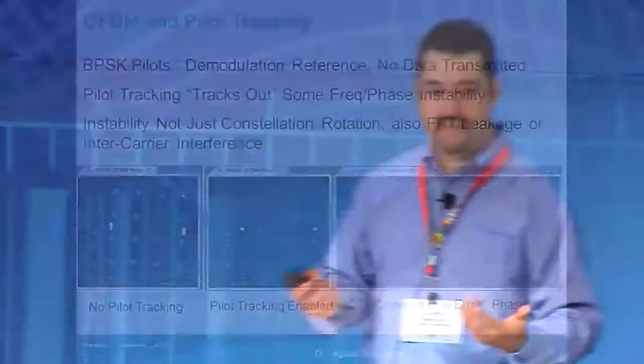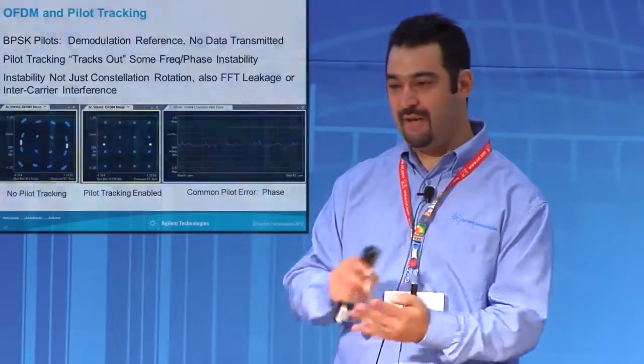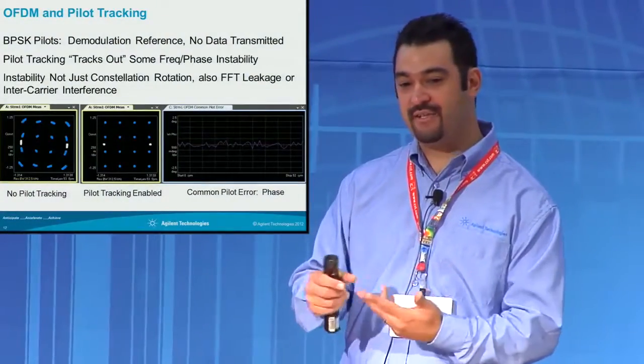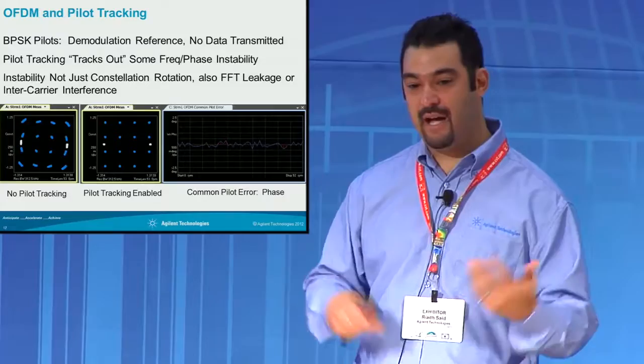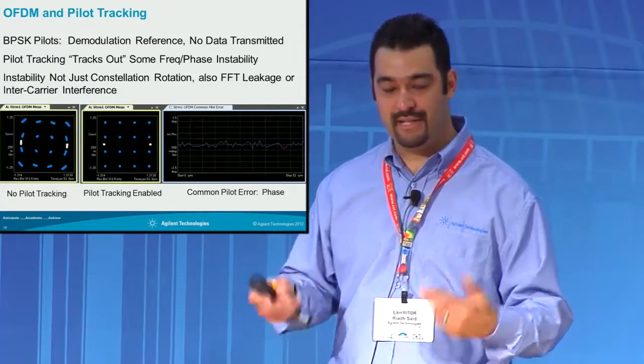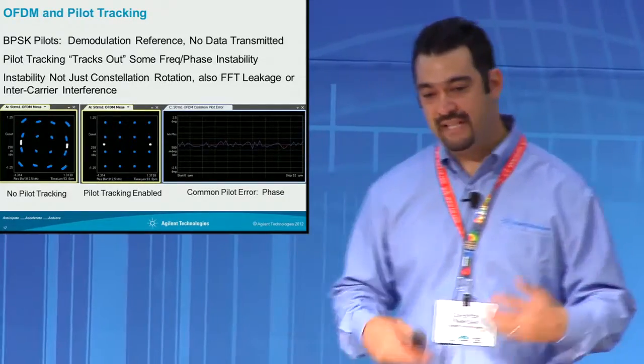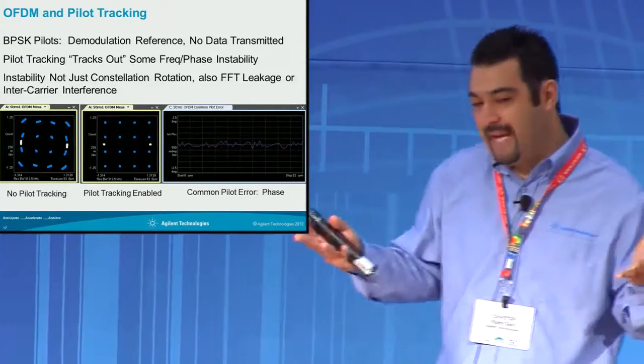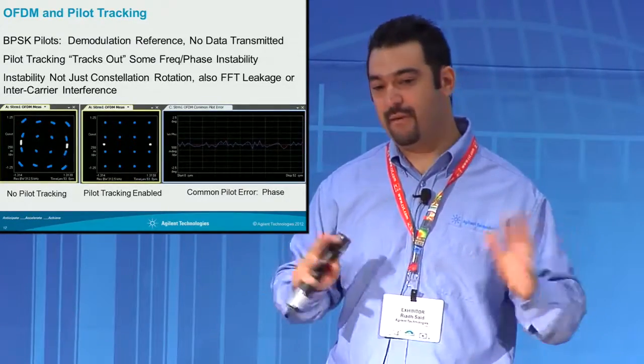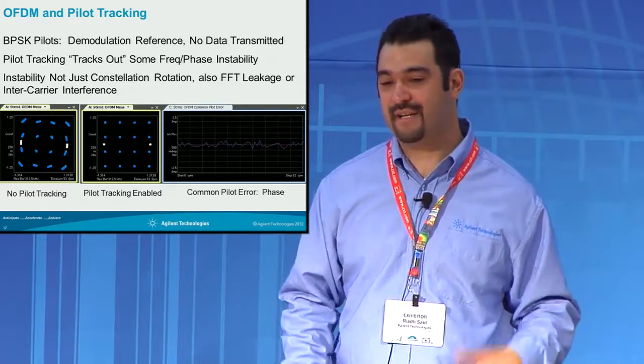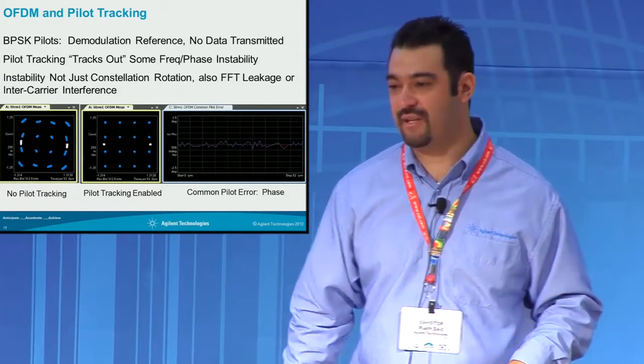A lot of the OFDM standards have that. Typically, this is only good out to about 10% of the channel spacing. In an OFDM system with multiple carriers, your channel spacing is maybe 100 kilohertz or 300 kilohertz. Roughly 10% is a good rule of thumb to start from.